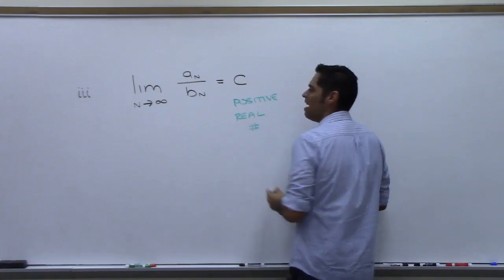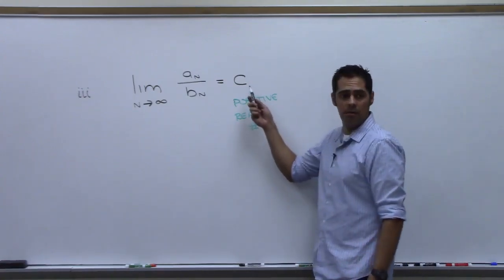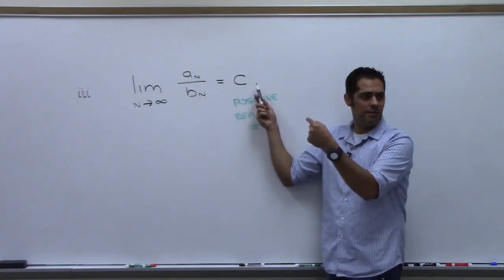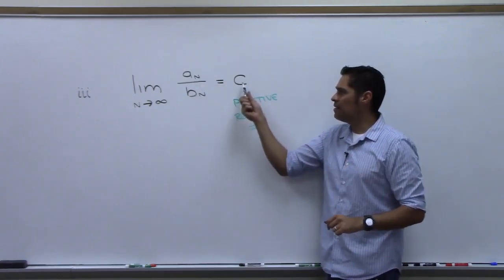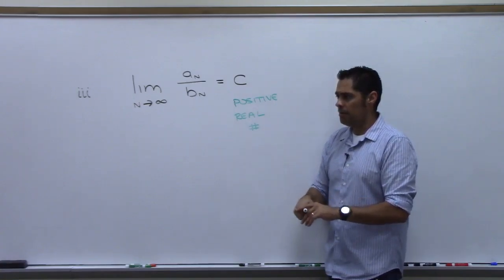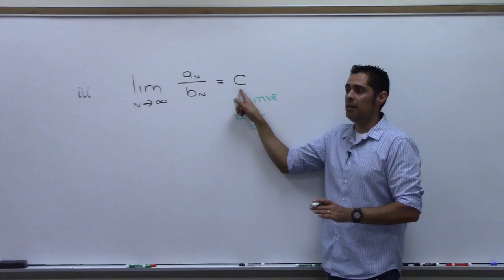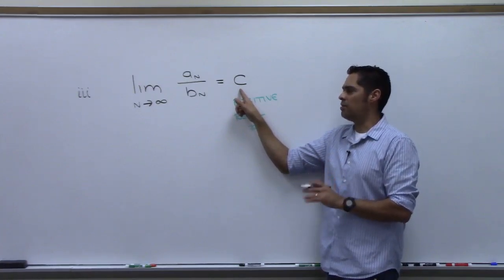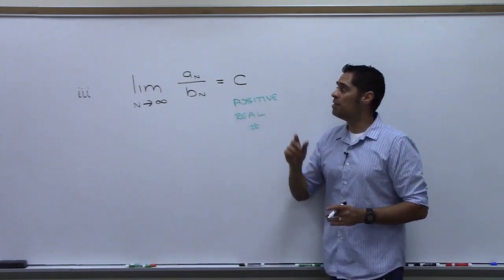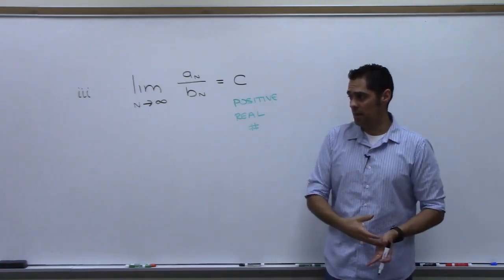Infinity is not a number. So if you take this limit and get infinity, the test fails. If you get zero, the test fails. But if you get a number other than infinity or zero, then whatever the series you're comparing it to does, the one you're interested in does the same.